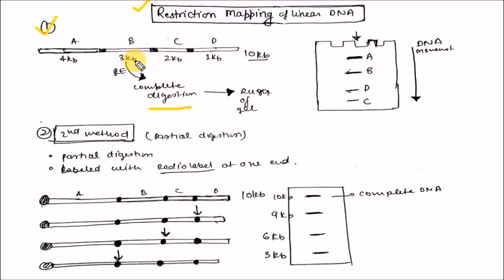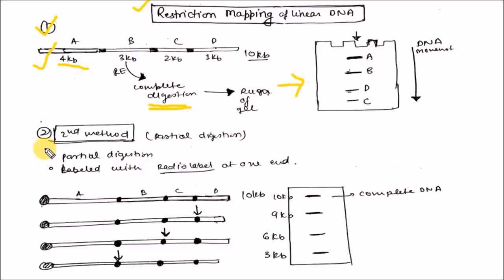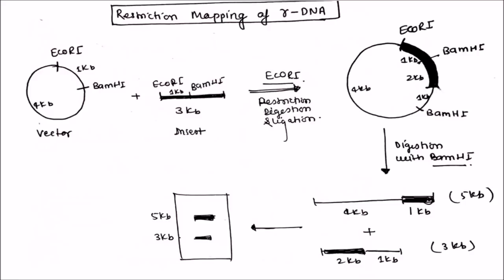For complete digestion restriction mapping of linear DNA, digest the linear DNA with the restriction enzyme, obtain the fragments, and run them on the gel to get the restriction map. For partial digestion, perform the partial digestion with the restriction enzyme and you will get the restriction map after gel electrophoresis. This is the restriction mapping of recombinant DNA.